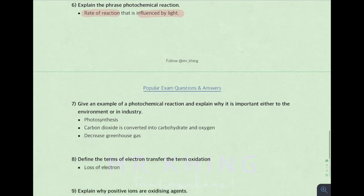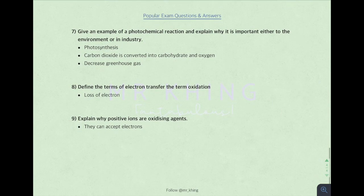So next, give an example of photochemical reaction and explain why it is so important, either to the environment or in industry. Remember, photochemical reaction. I have example photosynthesis.